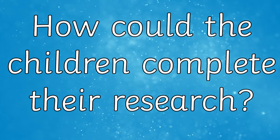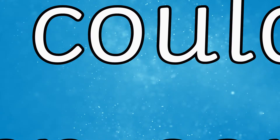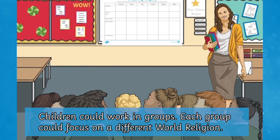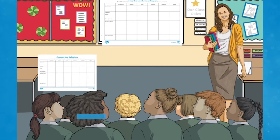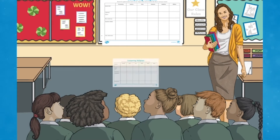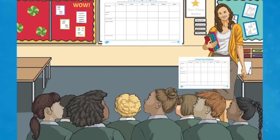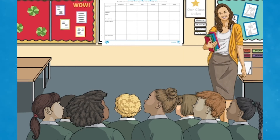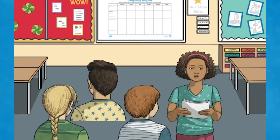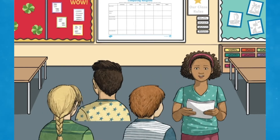The children could complete their research in a number of different ways. Firstly, you could split your children into groups, asking each group to focus on their own world religion. You could blow up the worksheet to A3 or A2 size so that children are working collaboratively to complete it. Then once the children have completed their research, you could get them to share their expertise with the other children in the class.